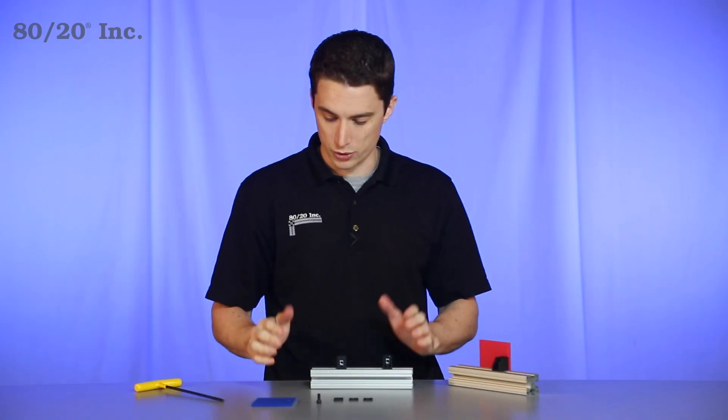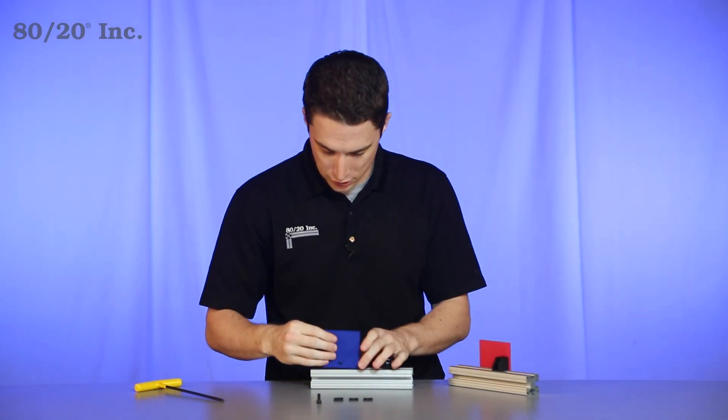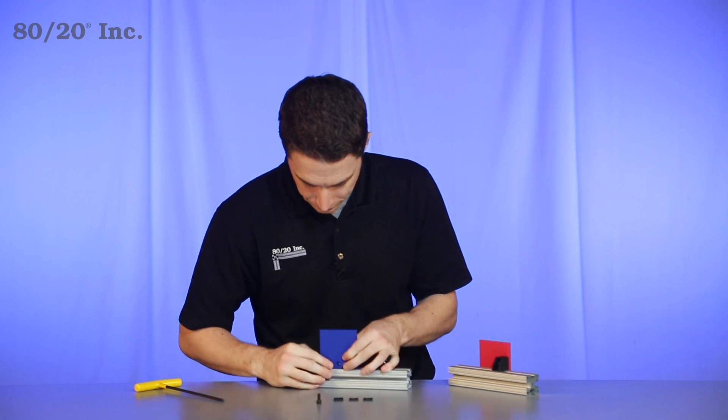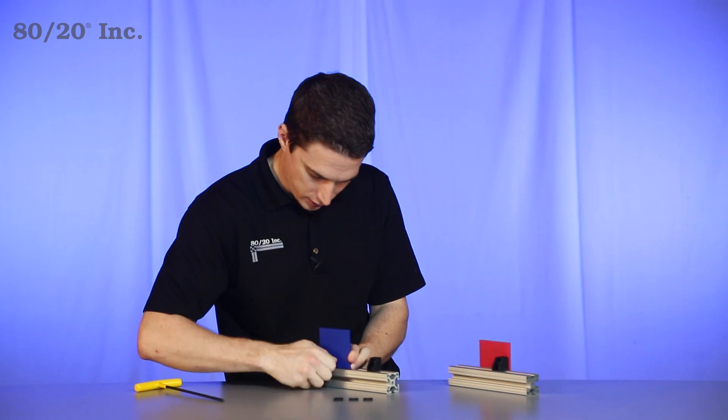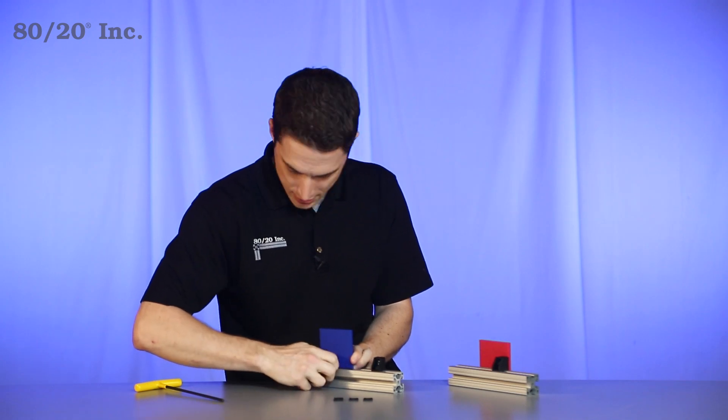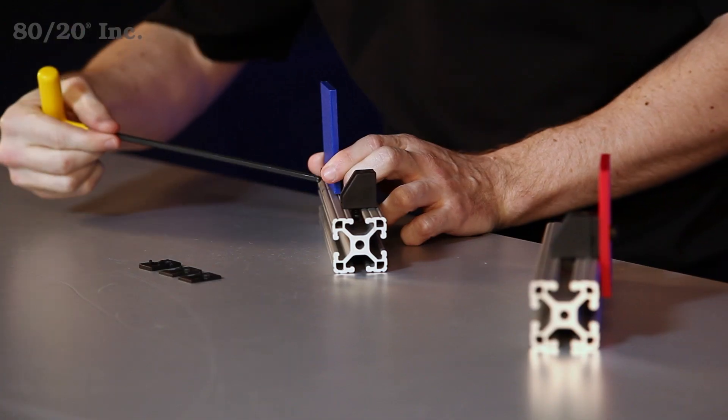Regardless of which one you choose, the panel simply mounts to the back of the block. You feed your bolt through, right into the block, hand tighten that down, and finish it off with your wrench.